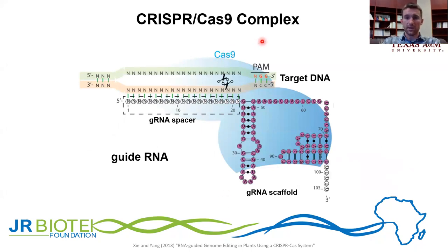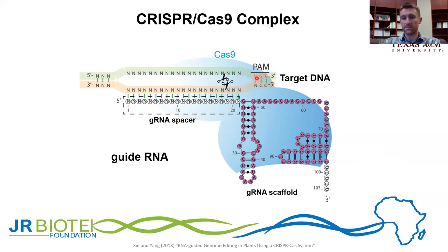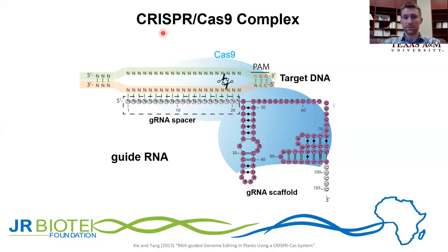The CRISPR-Cas9 complex consists of two basic components: the Cas9 endonuclease and the guide RNA. The guide RNA can be further subdivided into the guide RNA spacer and the guide RNA scaffold. The spacer region is a 20-nucleotide sequence that is going to be identical to your target region. This 20-nucleotide site can be any 20 nucleotides that is immediately upstream of a PAM site — that's protospacer adjacent motif — which is going to be an NGG, where N can stand for any nucleotide. The downstream area of the guide is called the scaffold. This RNA section will fold in on itself and create certain stem loops, which help it interact with the Cas9, forming the CRISPR-Cas9 complex.